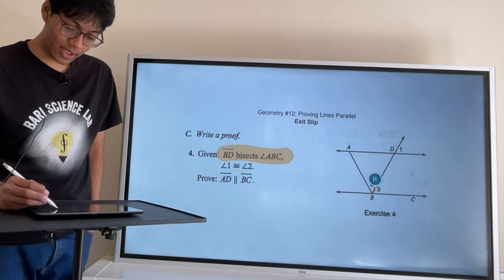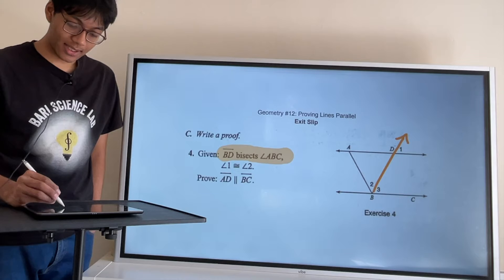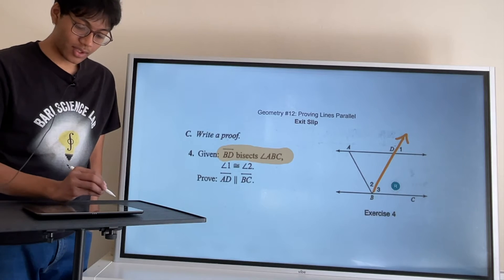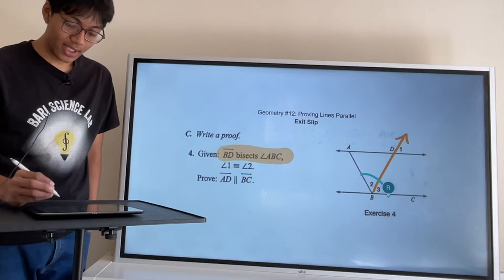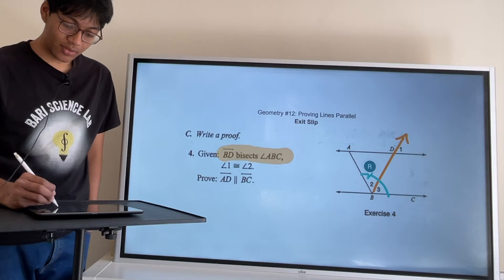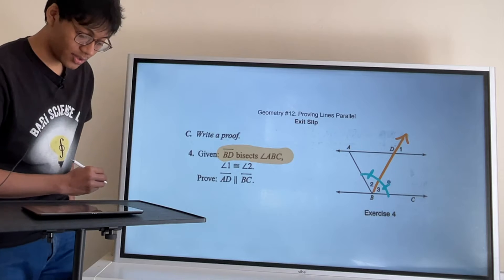BD is this ray over here and apparently it bisects this angle ABC. So what does bisect mean? Bisect means cut something in half. So that means this angle 2 is equal to this angle 3. Okay, that's all good.